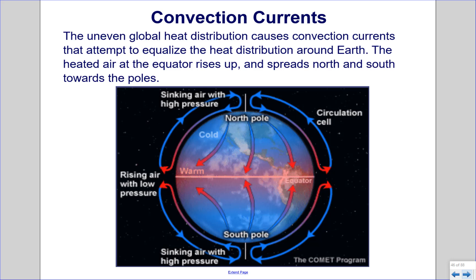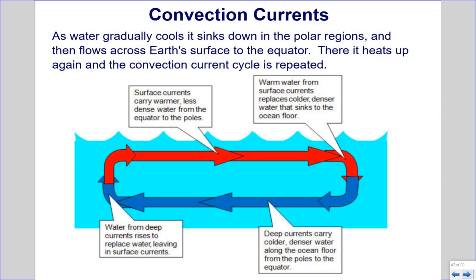Convection currents. The uneven global heat distribution causes convection currents that attempt to equalize the heat distribution around the Earth. The heated air at the equator rises up and spreads north and south towards the poles. As water gradually cools, it sinks down in the polar regions and then flows across Earth's surface to the equator, where it heats up again and the convection current cycle is repeated.